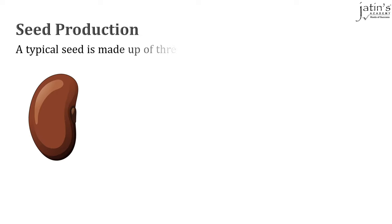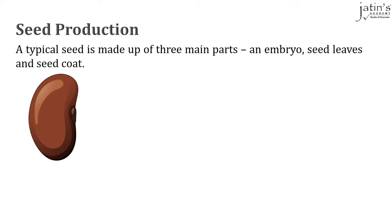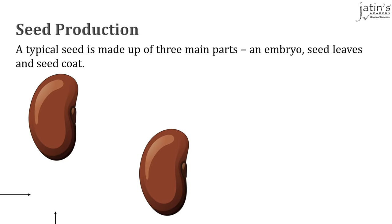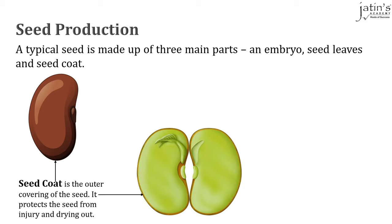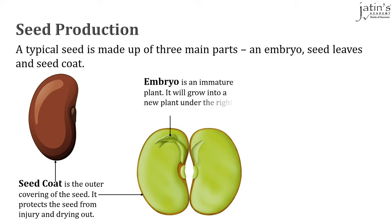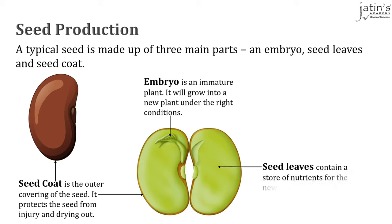Let's see how a seed is produced. A typical seed is made up of three main parts: an embryo, seed leaves, and the seed coat. The outer covering of the seed is the seed coat. It protects the seed from injury and drying out. When we open up the seed, we see inside a tiny small baby plant — that is the embryo. It is an immature plant which will grow into a new plant under the right conditions. Seed leaves inside the seed coat contain a store of nutrients for the new plant that will grow from the embryo.